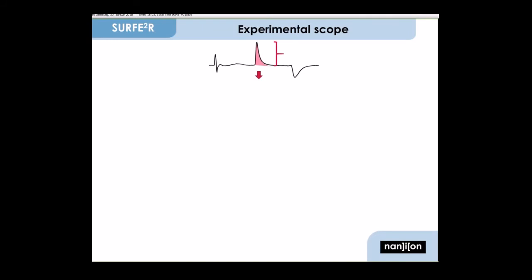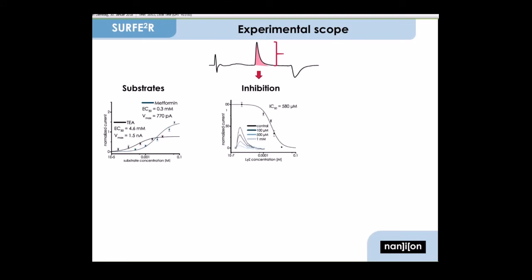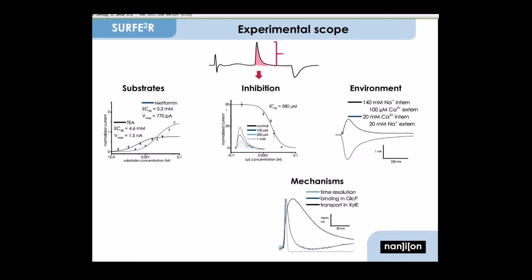The height of the peak and the area under the curve reflect the speed of the reaction and the transported charge. When looking at these parameters, one can, for example, study affinity of substrates or inhibitor properties. It's also possible to change the environment of the transporter and to learn about the mechanics and properties of the transporter. It's even possible to resolve binding events in case they induce a charge displacement in the transporter.